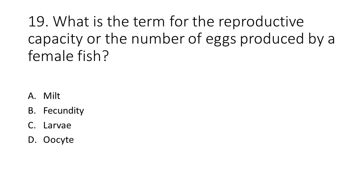Number 19. What is the term for the reproductive capacity or the number of eggs produced by a female fish? a. Milt. b. Fecundity. c. Larvae. d. Oocyte.